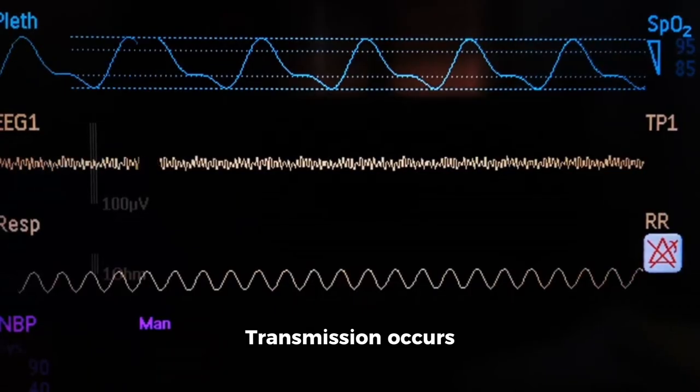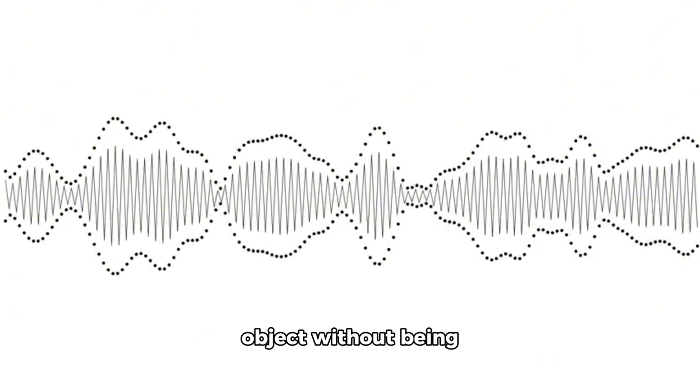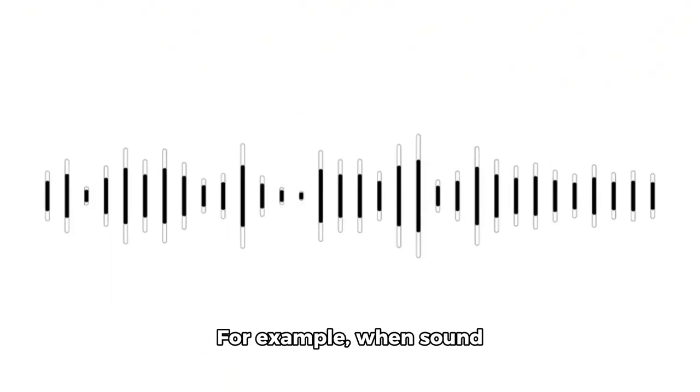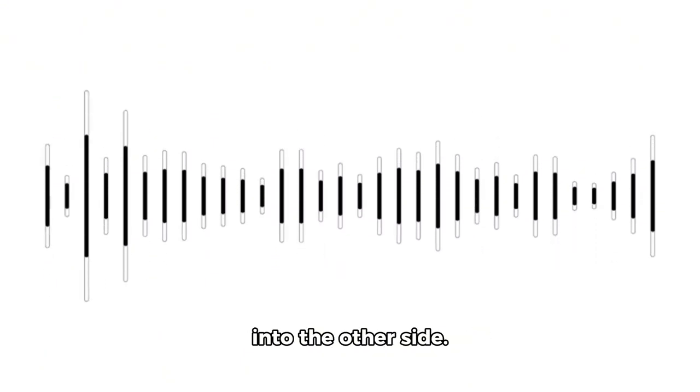Transmission. Transmission occurs when sound waves pass through a medium or object without being reflected or absorbed. For example, when sound waves pass through a window, they can transmit into the other side.